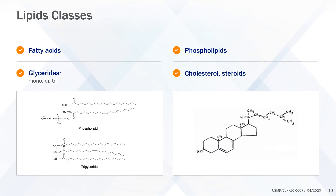Besides fatty acids, lipids also include phospholipids — the primary fatty acids contained in cell membranes — as well as mono-, di-, and triglycerides. Triglycerides are the primary fatty acid molecules of lipid emulsions and fat tissue, along with cholesterol and steroids.